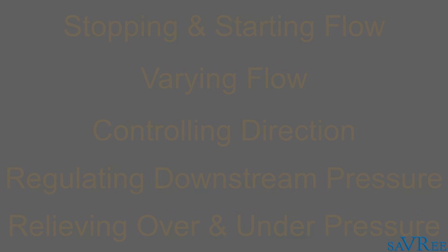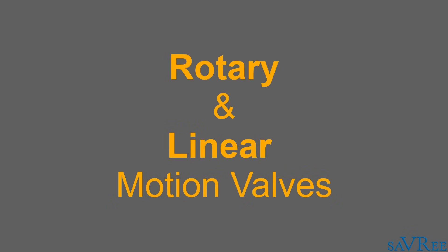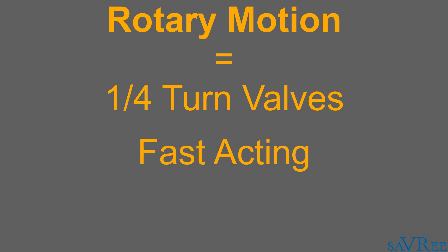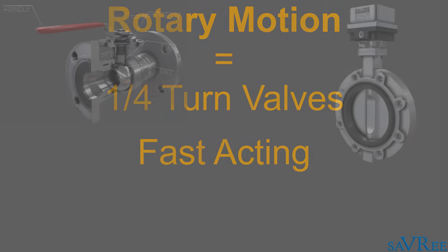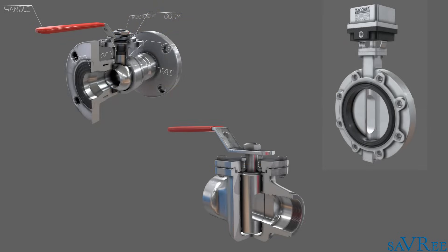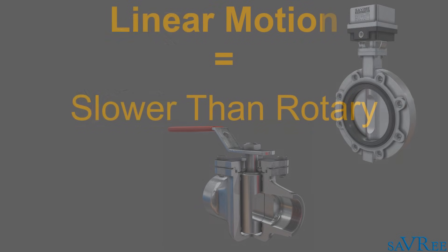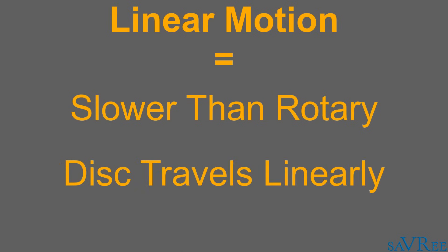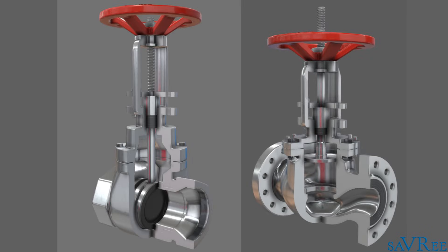Valves can be categorized as rotary or linear motion valves. Rotary valves are those which require a quarter of a turn in order to change position from fully open to fully closed or vice versa. Rotary valves are fast acting valves. Examples of rotary valves would include the ball, plug and butterfly valves. Linear motion valves are slower to operate than quarter turn valves. They raise or lower the disc in order to open, regulate or close the flow. Examples include the gate and globe type valves.